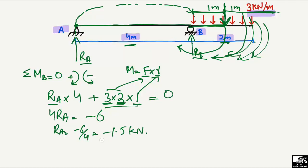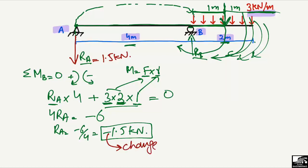The negative sign means our assumed direction for RA was wrong. We must change the direction — RA is actually 1.5 kilonewtons acting downward. If we had obtained a positive result, we would not need to change the direction. So RA = 1.5 kN downward.